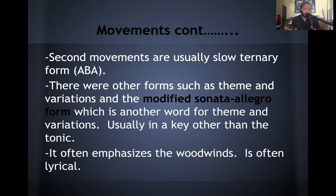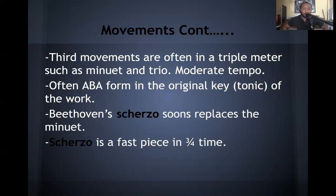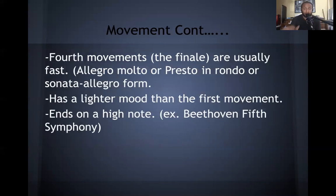The second movement is often very lyrical, with emphasis on woodwinds taking the lead on melody, though strings also played a big part since strings was the largest family in the ensemble. The third movement is basically a dance in triple meter — minuet and trio — not very fast and not very slow, in ternary form in the original tonic key. Beethoven started to replace the minuet and trio with a scherzo, which is a faster piece in three-four time, like a fast waltz.